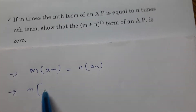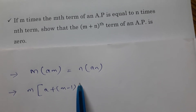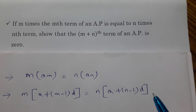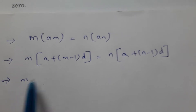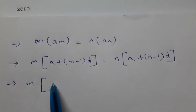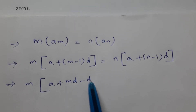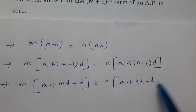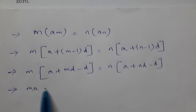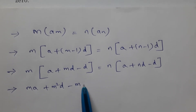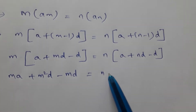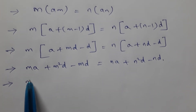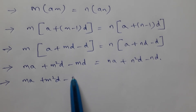So m times the mth term, which is a plus (m minus 1) into d, equals n times the nth term, which is a plus (n minus 1) into d. Multiplying out: ma plus m²d minus md equals na plus n²d minus nd.